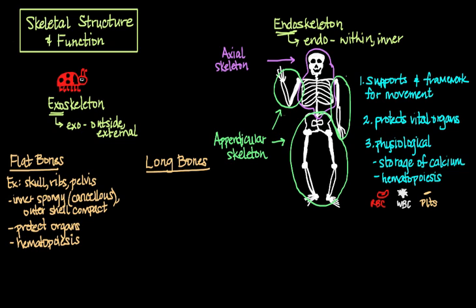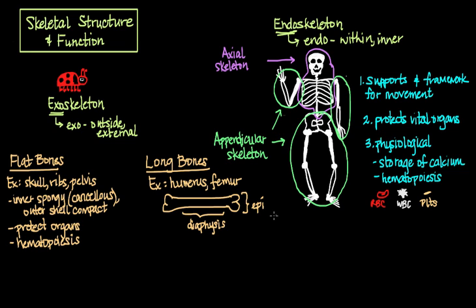Long bones on the other hand, some examples of those would be the humerus in your upper arm or say the femur in your lower leg. If I draw a long bone out here, there are a few different terms to be familiar with when you're referring to different parts of a long bone. The long middle portion of a long bone is called the diaphysis, and then the end of a long bone is called the epiphysis.